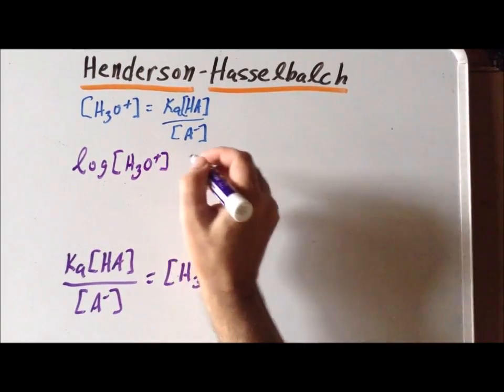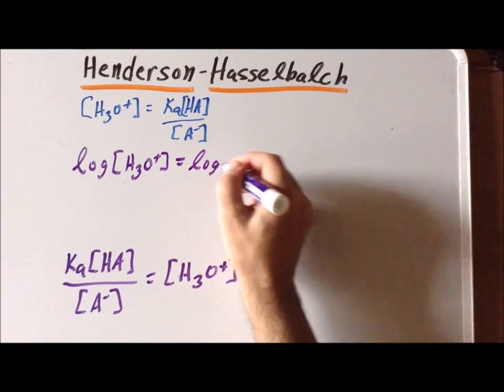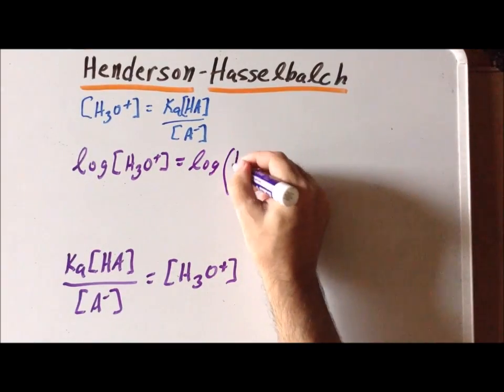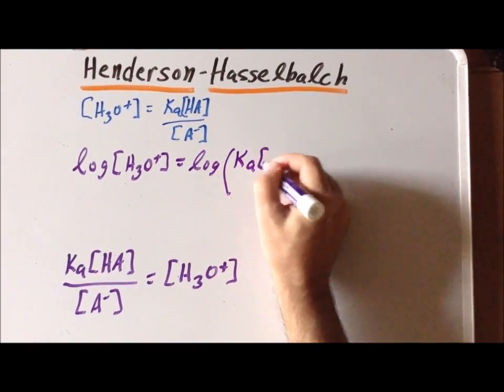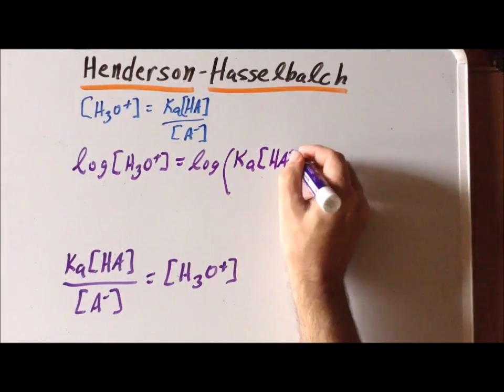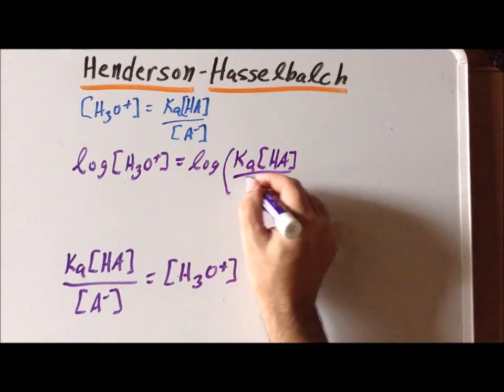And the right-hand side becomes the log of this expression Ka times the concentration of HA divided by A minus.